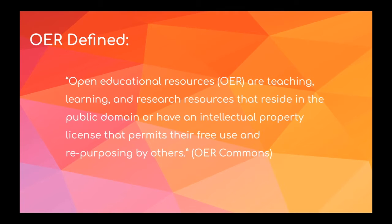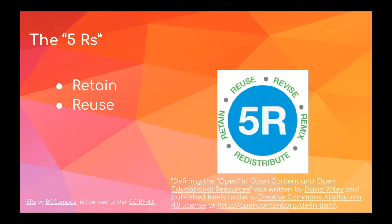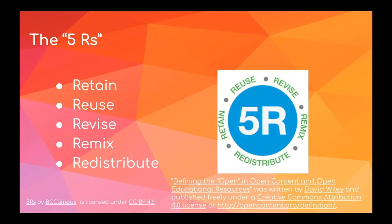Usually this follows the five R's of open. First is retain — that's the ability to make, own, and control a copy of the resource, for example to download and keep your own copy. Then we have reuse, which is to use your original, revised, or remixed copy of the resource publicly, for example on a website, in a presentation, in class. Then there is revise, which is the ability to edit, adapt, and modify your copy of the resource. Then we have remix, which is to combine your original or revised copy with other existing material to create something new. And then redistribute — that's the ability to share copies of your original, revised, or remixed copy with others.